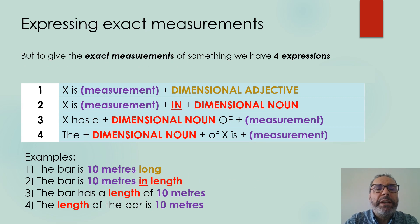But if we want to give the exact measurements of something, we have four possibilities in English. Here we have the four. The first one is the most common. Something is plus the measurement the dimensional adjective. Example 1. The bar is 10 meters long.